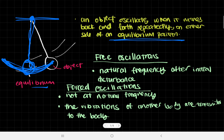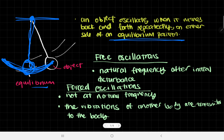The natural frequency obviously depends on the mass - for example, if this was heavier, it would oscillate differently - or the shape, like if the string was shorter or longer, it would oscillate at a different frequency. A free oscillation is basically something that continues happening after an initial disturbance. You don't need to keep applying a force, and it oscillates at its natural frequency.